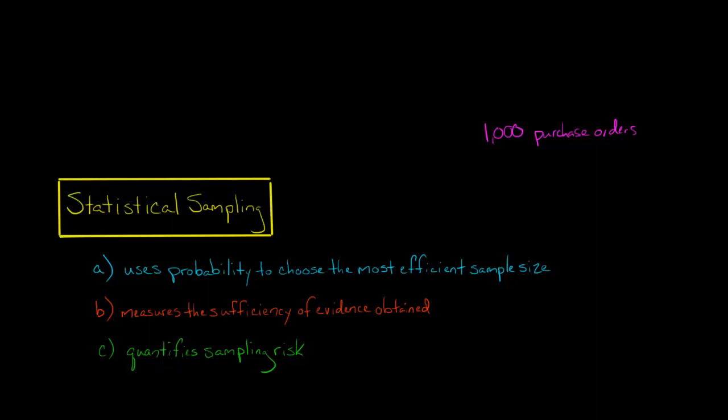With statistical sampling, what we would do is use probability to determine what would be the optimal and most efficient sample size out of this 1,000, given the tolerable risk and so forth. We're also going to measure the sufficiency of the evidence that we're obtaining, and we're going to be able to quantify sampling risk.